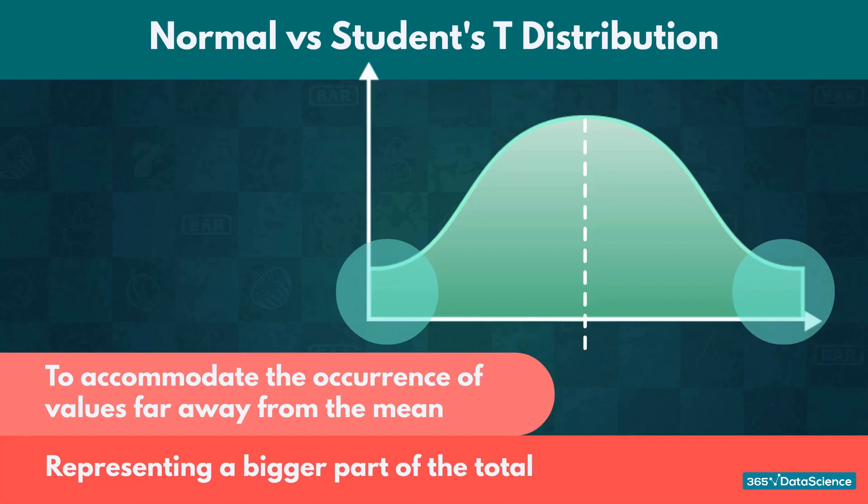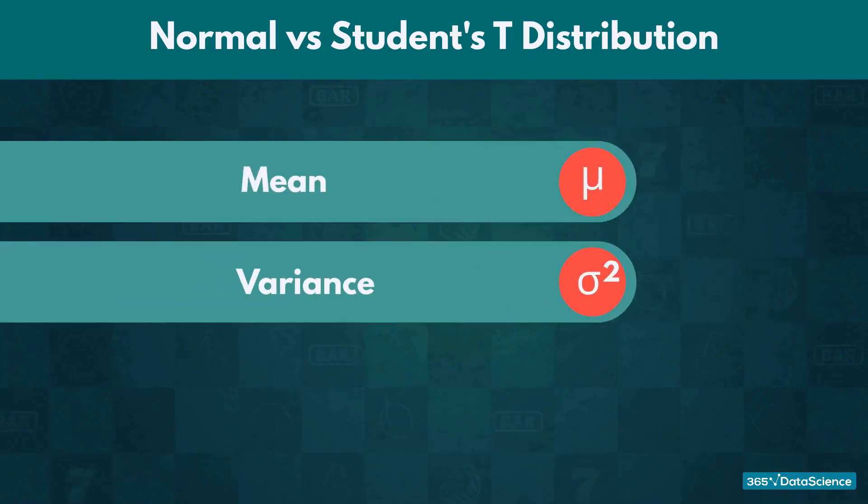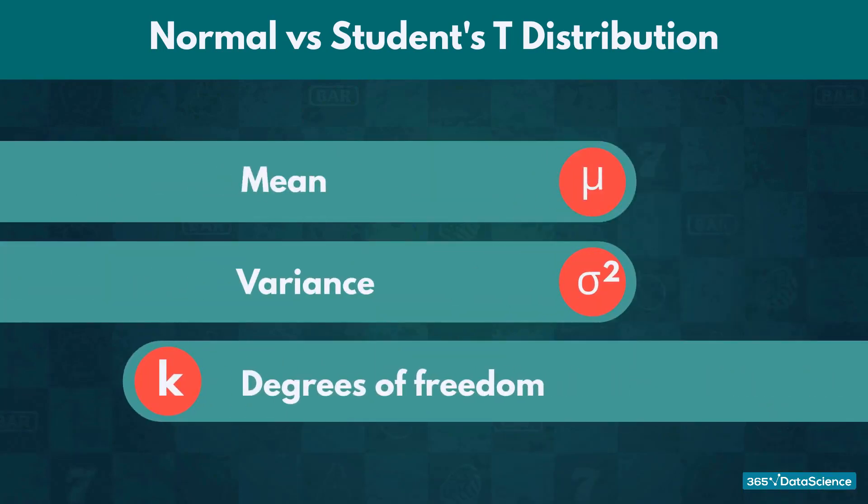Another key difference between the student's t-distribution and the normal one is that apart from the mean and variance, we must also define the degrees of freedom for the distribution.